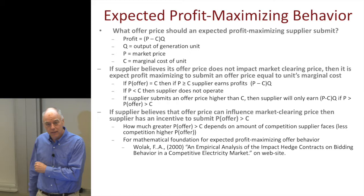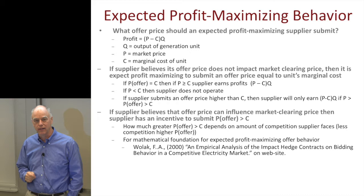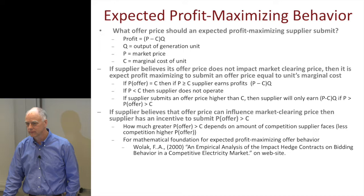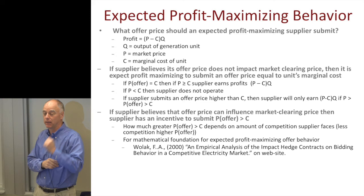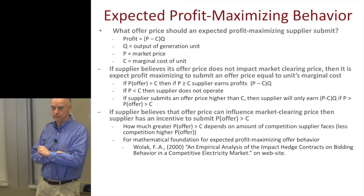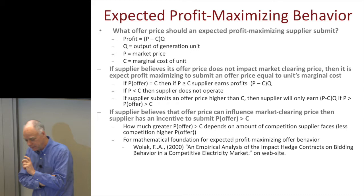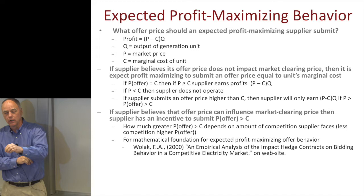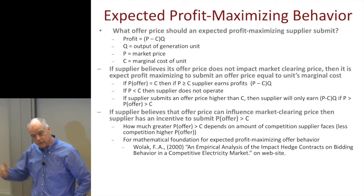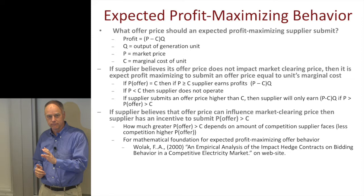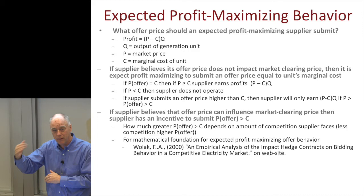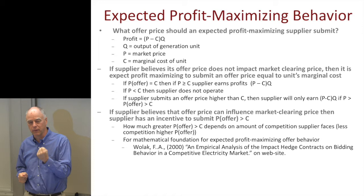Now, what if you submit an offer price above your marginal cost? There will be circumstances where you don't run even though you could have earned profits — you'd be left out of the market when profit opportunities were available. Conversely, if you bid below your marginal cost, you run more often but there will be times you lose money. So if you believe nothing you do influences the market clearing price, the optimal strategy is to bid your offer price equal to your marginal cost.